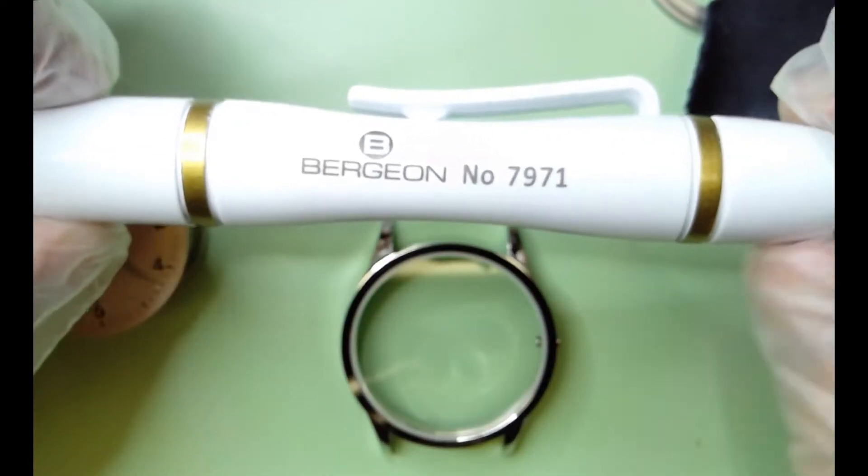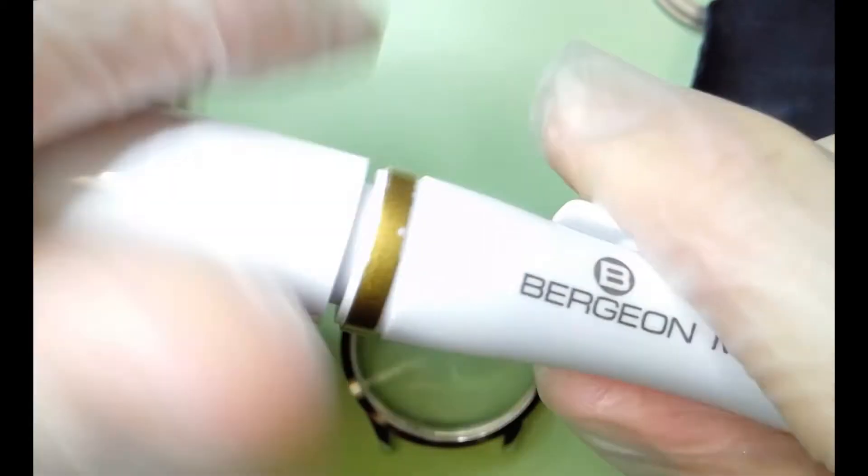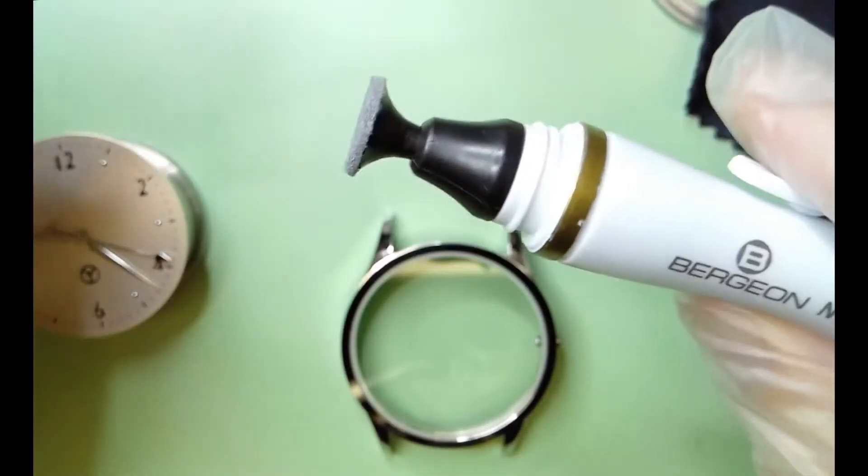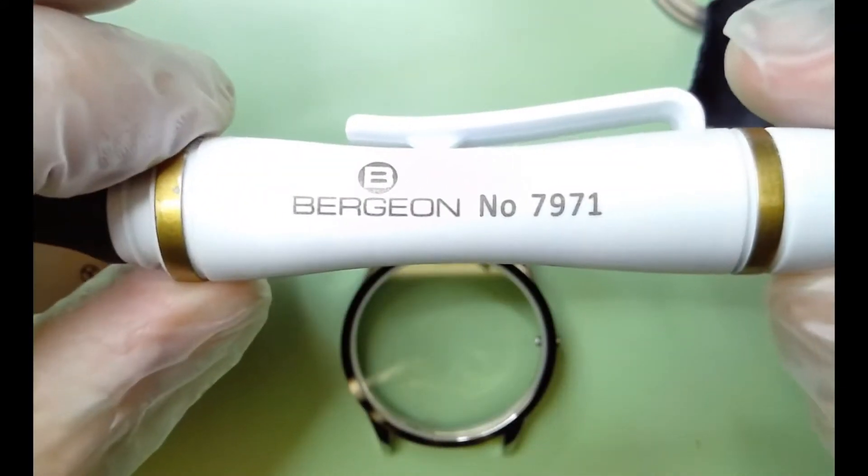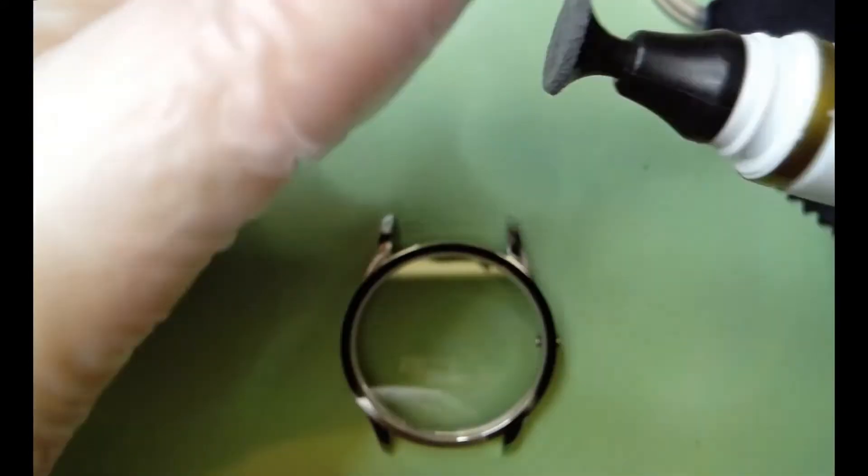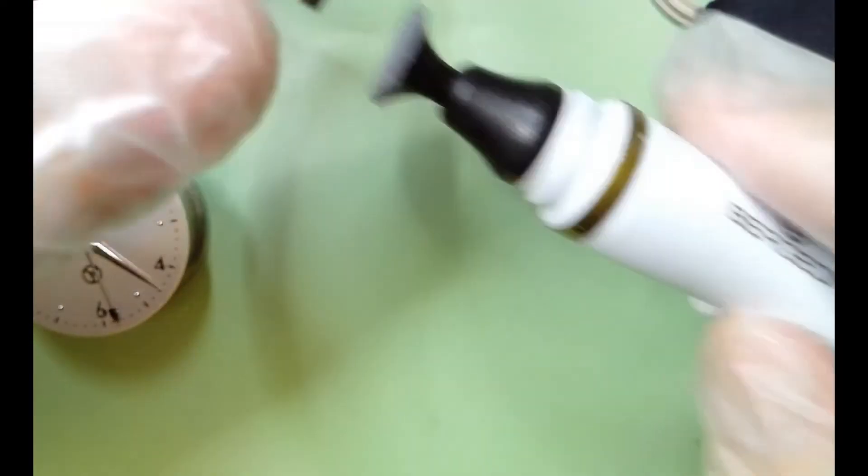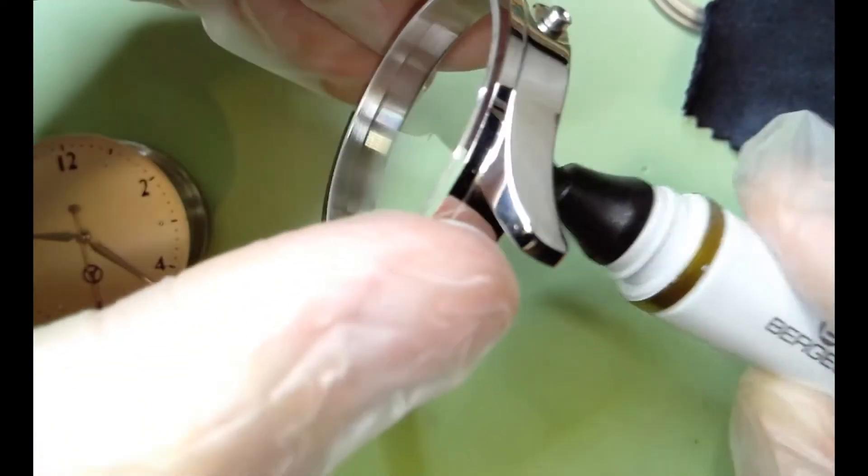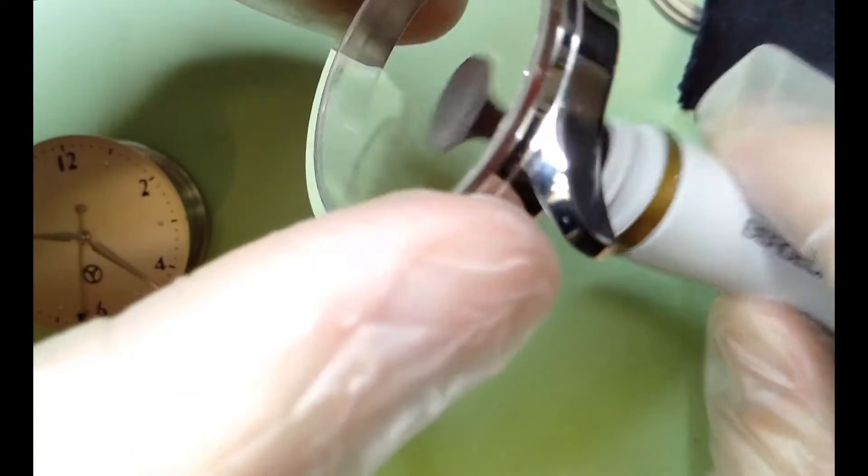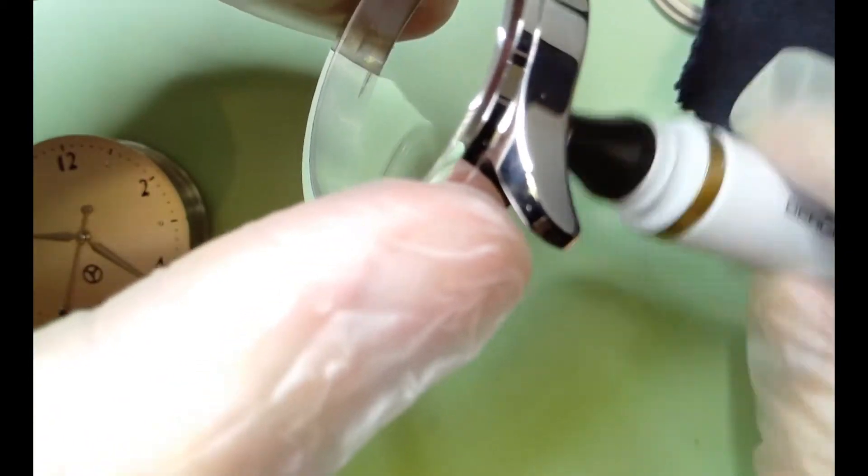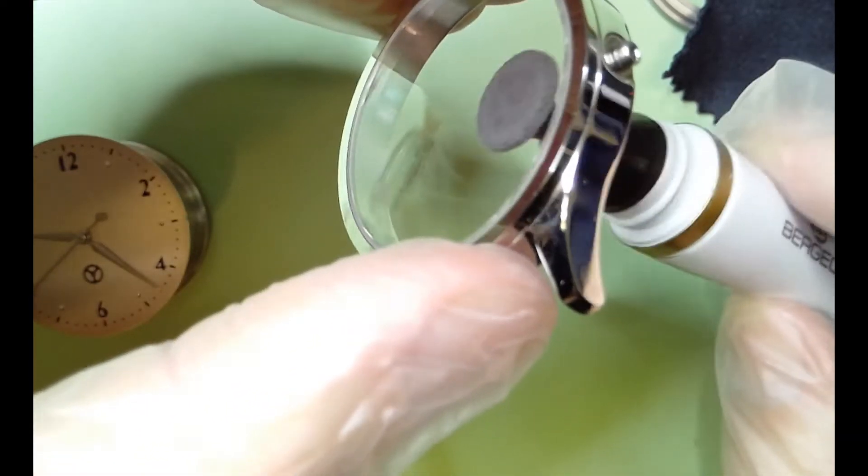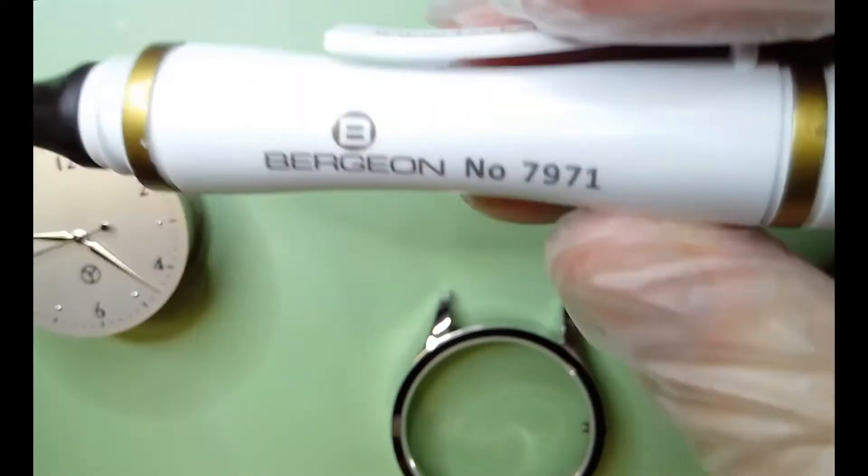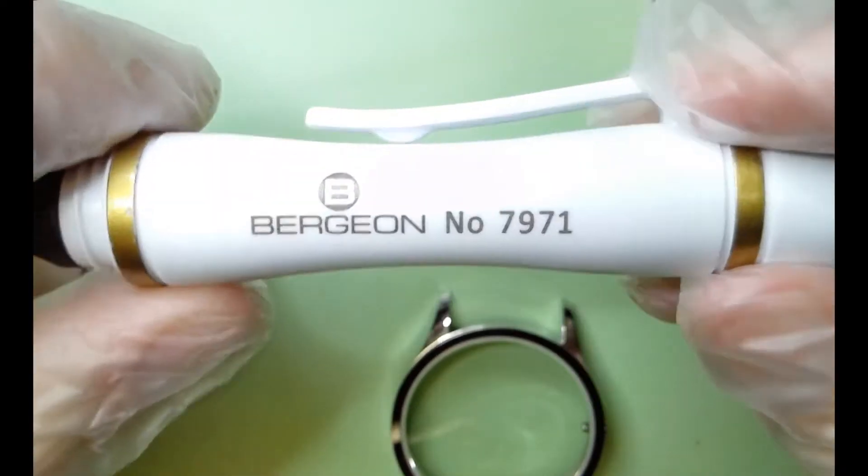Another useful tool I have found is this Bergeon dial pen crystal pen, the part number 7971. You can get it from casker. And basically, I'm not going to do it because the inside of my dial is relatively clean, but if you have marks you can rub this pen inside there and it tends to pick up everything and not leave lint trails behind. It's a little bit pricey, but it's a really good tool.